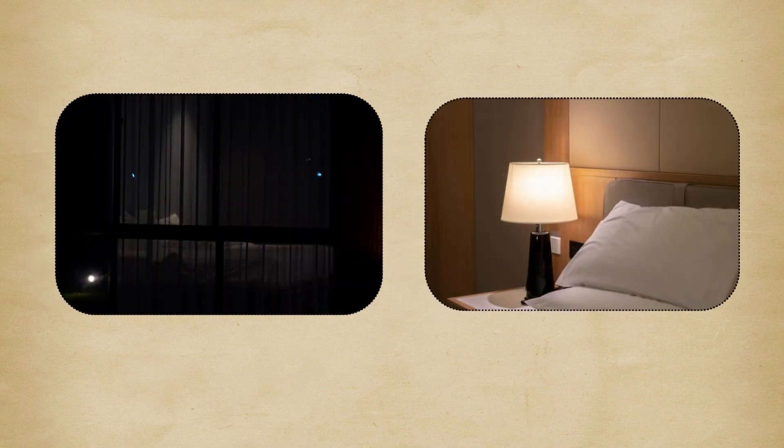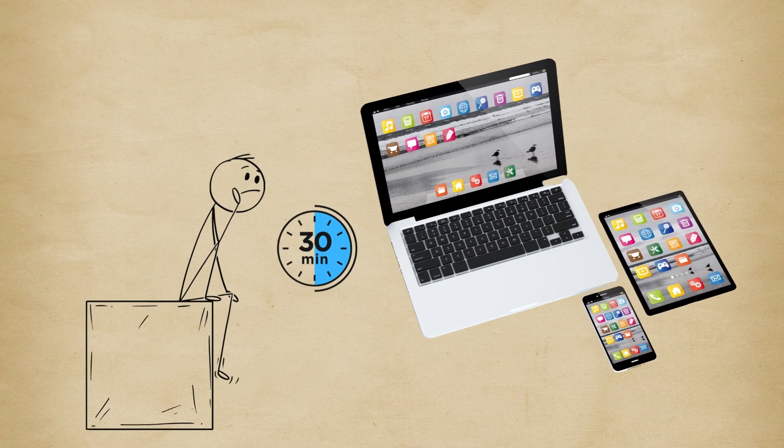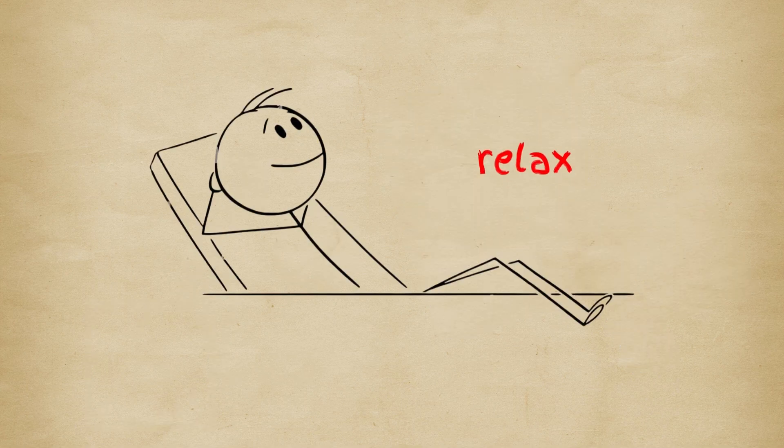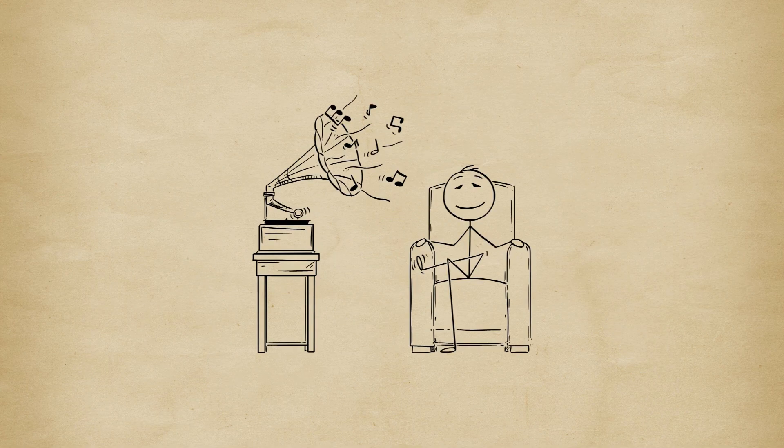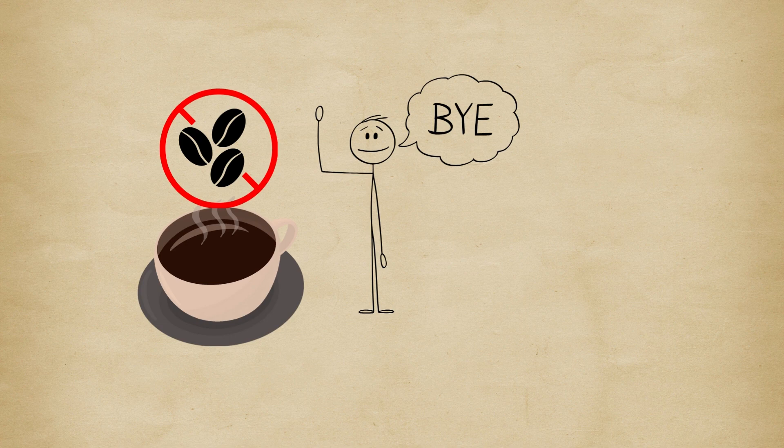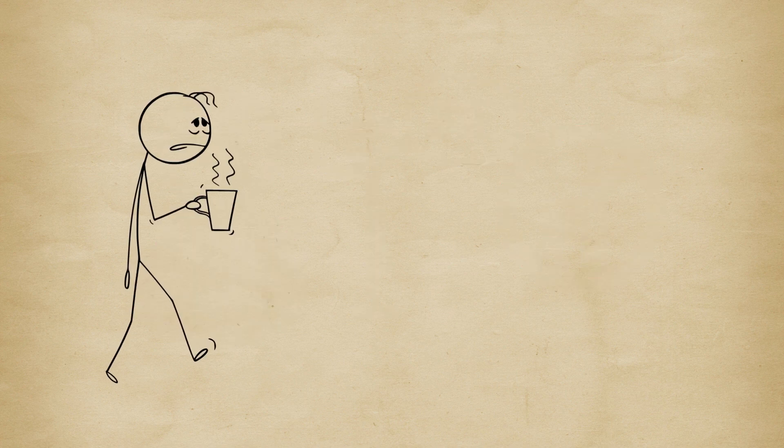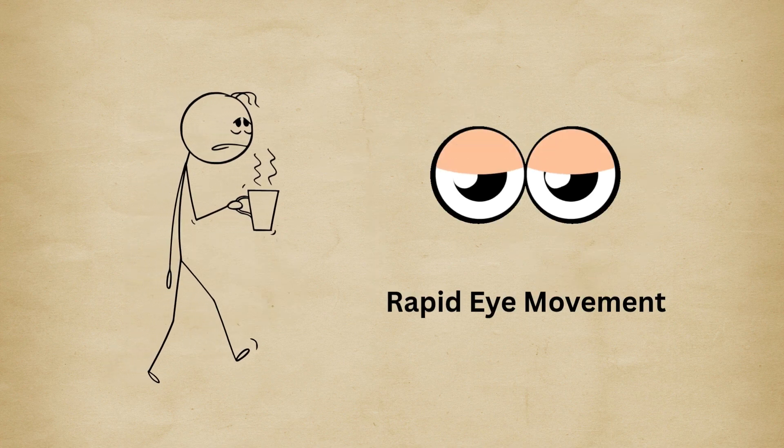Dim the lights, put away screens 30 minutes before sleep, and do something relaxing like journaling, reading, or listening to mellow music. Skip caffeine and alcohol near bedtime. They mess with your REM cycles more than you think.